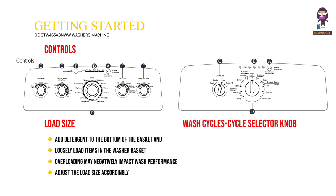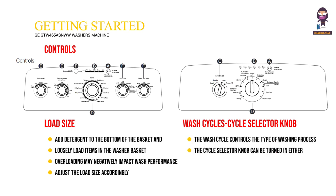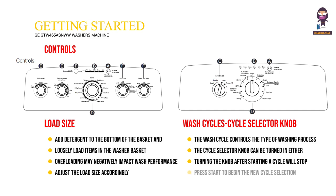Wash Cycle Selector Knob: The wash cycle controls the type of washing process. The cycle selector knob can be turned in either direction. Turning the knob after starting a cycle will stop the washer and change the cycle options to the new selection. Press Start to begin the new cycle selection.